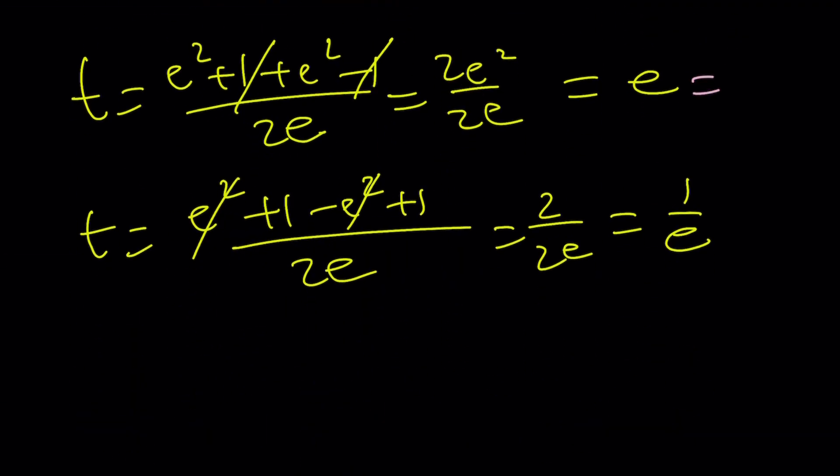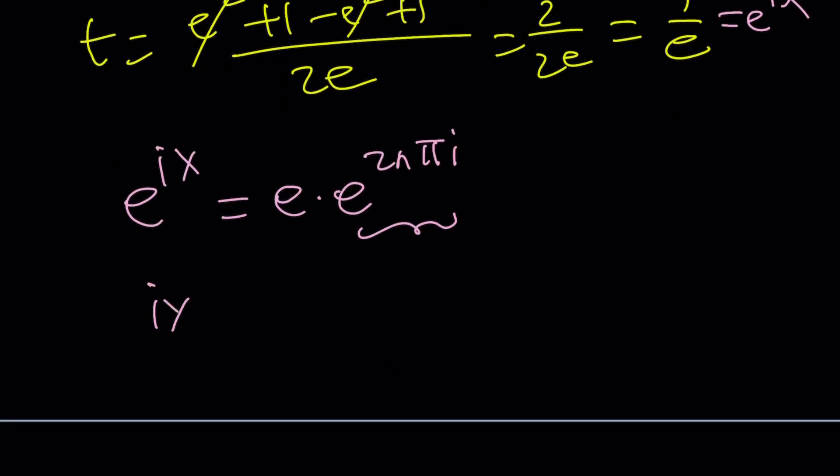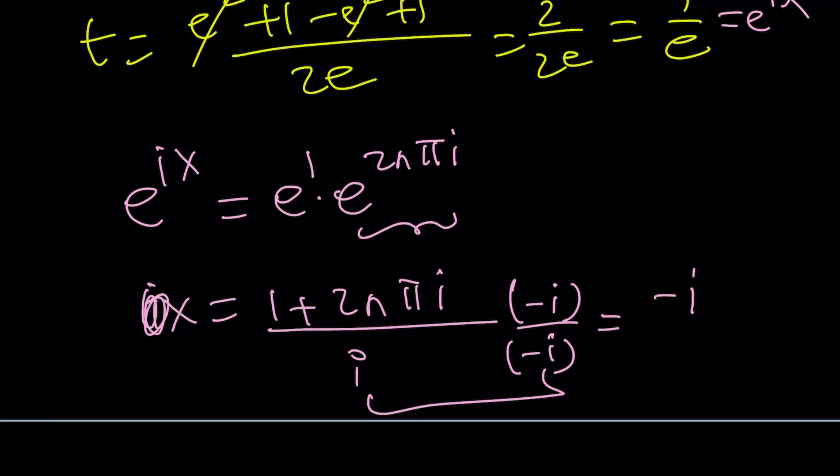E to the power ix. So, from here, what do you get? E to the power ix equals E. But you're going to write the E as E times E to the power 2N pi i. Because this represents 1 in the complex world, so we have to think about it this way. ix equals 1 plus 2N pi i. If you divide both sides by i, you'll get the x value. And if you multiply both the top and the bottom by negative i, you're going to get a positive 1 at the bottom. So, you're going to get negative i plus minus i squared. That's going to give us a plus 2N pi. You could also write it as 2N pi minus i.